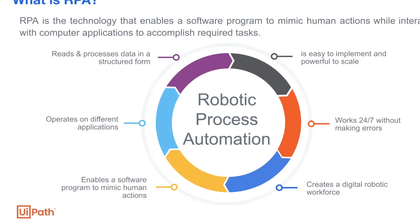RPA goes beyond just mimicking human actions. For example, we can also link other deeper-level automation modules into RPA. Since RPA is an automation technology, it has all the benefits of automation — it can increase the efficiency and effectiveness of certain tasks, it can work 24/7 without a break, and it facilitates the transformation of digitization, because whenever you automate something, you want to make sure you have structured or electronic data.